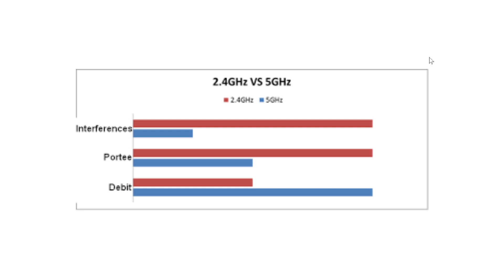That's why moving to 5 gigahertz in some cases might actually be a very good thing. There aren't that many 5 gigahertz devices yet, so that frequency range tends to be much quieter, and you'll often have fewer disconnects when you use the 5 gigahertz range. So if you're capable of using 5, do so — there's a good chance it will be much better than 2.4 if you have connection problems.